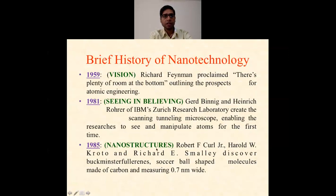Now the brief history of nanotechnology. We divided it into three parts: first the vision, second the believing, and third the nanostructures. In 1959, Richard Feynman proclaimed there is plenty of room at the bottom, outlining the prospects for atomic engineering. In 1981, Gerd Binnig and Heinrich Rohrer of IBM at Zurich Research Laboratory created the scanning tunneling microscope, enabling researchers to see and manipulate atoms for the first time. Without seeing, we cannot assume or understand what actually the nanoparticles or nanosystems are. This is the first instrument to visualize the nano atoms or nanosystems.